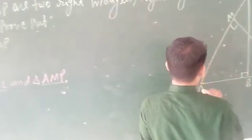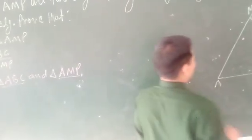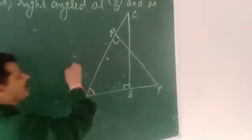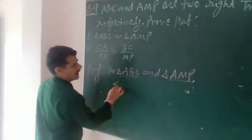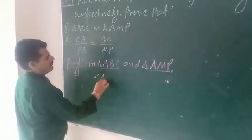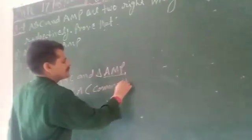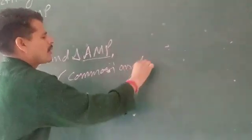So in triangle AMP, in the right triangles, angle A is common to the two right triangles. How is the angle? Common angle.